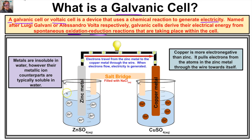We have a beaker on the left with a solution of zinc sulfate, and a beaker on the right with a solution of copper 2 sulfate. We're going to put a piece of zinc metal in the left solution, attach a wire to it, and attach the other end to a piece of copper metal that we drop into the copper 2 sulfate solution. We'll connect the two beakers with a salt bridge filled with a solution of NaCl, which we'll discuss momentarily.